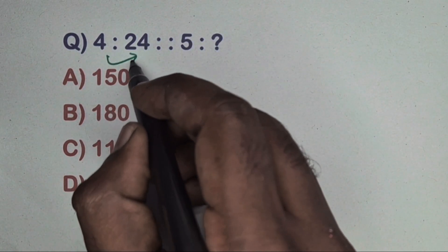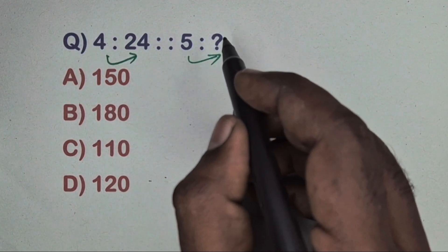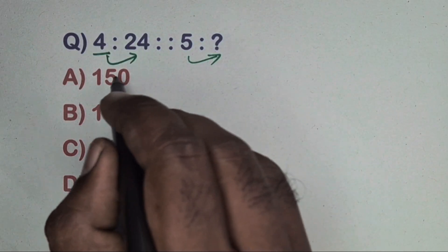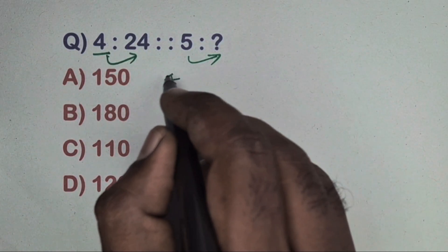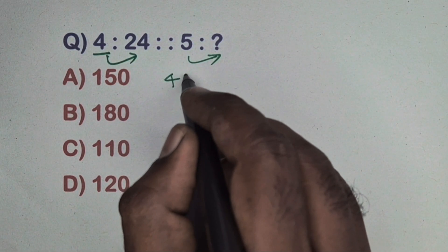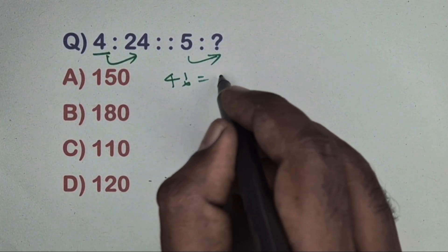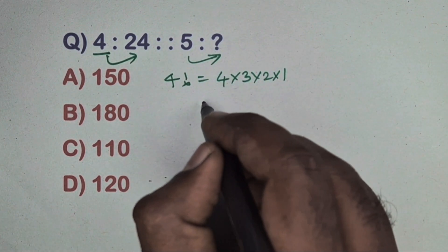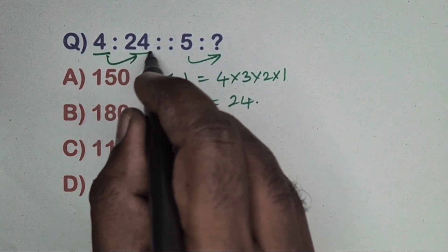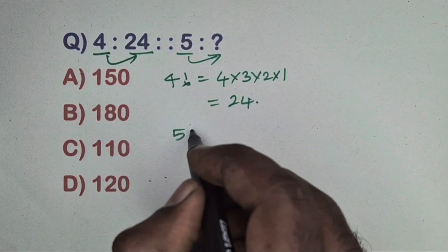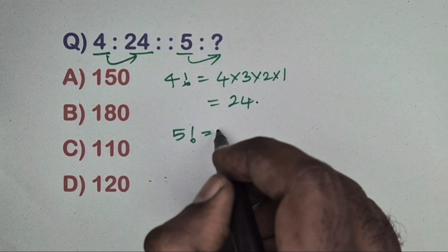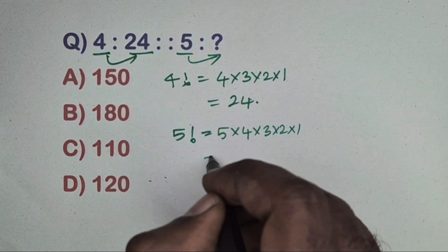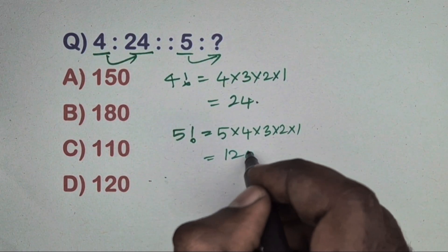Next question: 4 is related to 24 and 5 is related to which number? This is a factorial relation. 4 factorial equals 4×3×2×1 equals 24. Same way, 5 factorial equals 5×4×3×2×1, multiply these numbers and we get 120. So 120 is the correct answer.